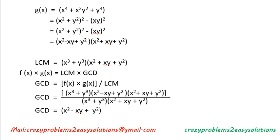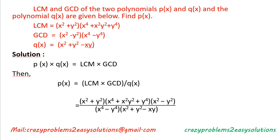GCD = f(x) × g(x) ÷ LCM. f(x) = x³ + y³ and g(x) = (x² − xy + y²)(x² + xy + y²), divided by LCM = (x³ + y³)(x² + xy + y²). After cancelling common factors, GCD = x² − xy + y².